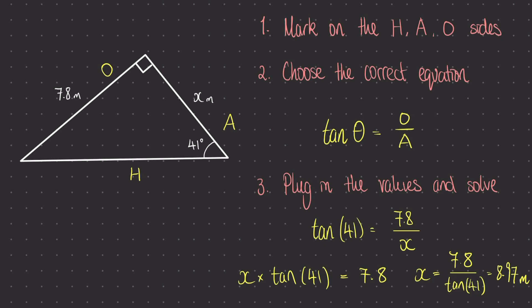These could be labelled with an unknown variable or with a numerical value. The final step is to take everything that you know from the triangle, place it into the equation that you've chosen, rearrange and solve for the missing variable.